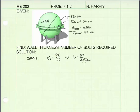I've replaced sigma 2 with sigma allowable. That's the allowable strength of the wall material. And now we can solve for t, the wall thickness.